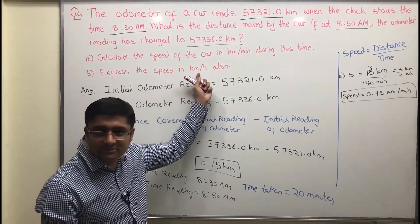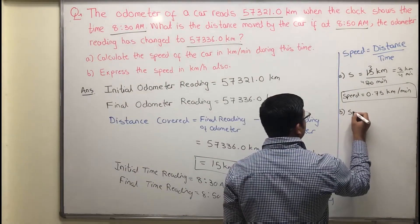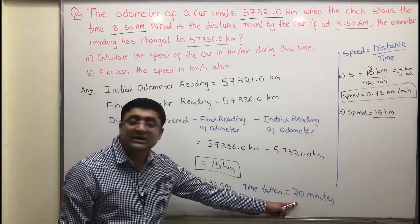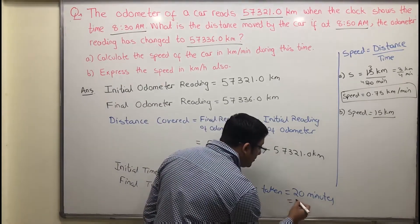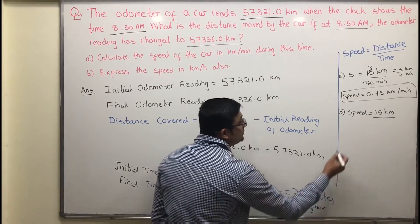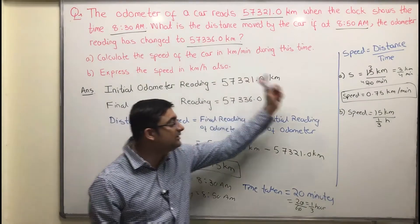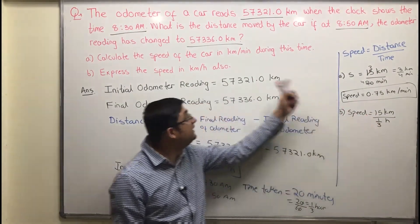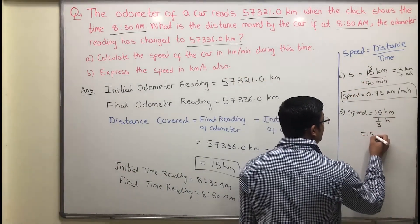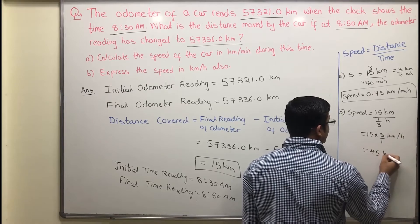Next, express the speed in kilometers per hour. That means take distance in kilometers and time in hours. Distance is again 15 km. We need to convert the time from minutes to hours by dividing by 60: 20 divided by 60 equals one-third of an hour. So speed equals 15 divided by one-third, which is 15 × 3 = 45 kilometers per hour.